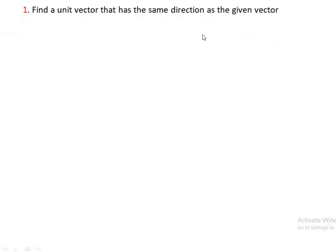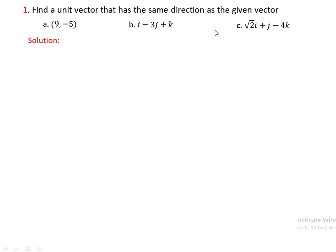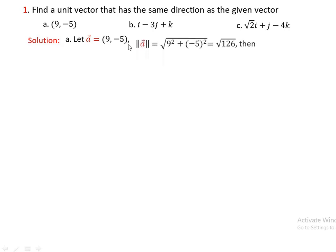Part (a): find a unit vector that has the same direction as the given vector ⟨9, -5⟩. Let's call this vector a. The formula for the unit vector in the same direction as a given vector is: one over the norm of a, times a. This gives the unit vector in the same direction as vector a.